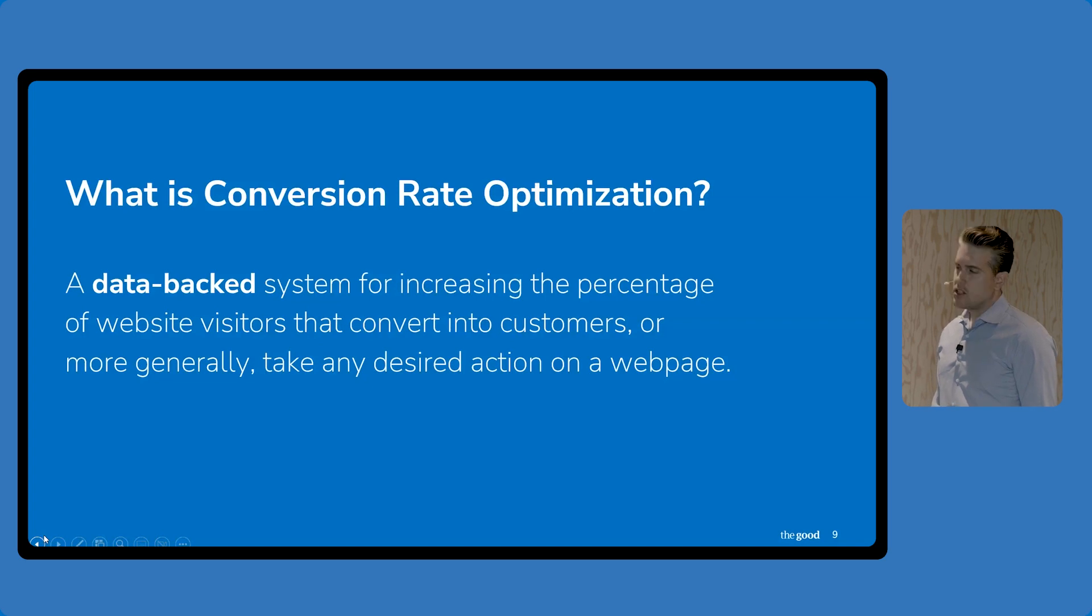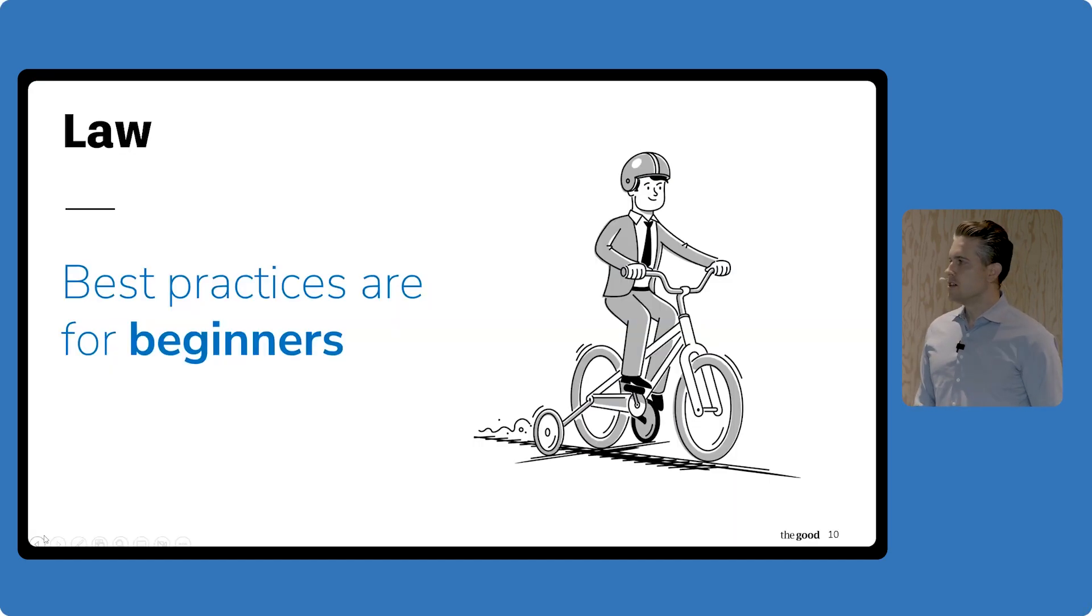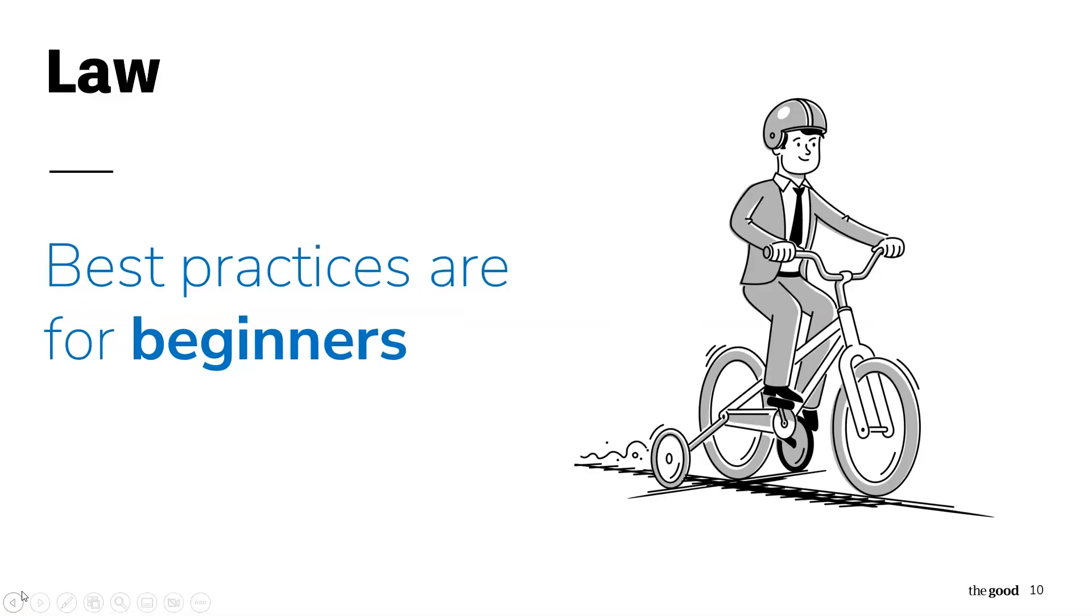The reality is that CRO isn't about trying random tactics. It's not about doing a checklist. It's about having the right data and making data-backed decisions. So that's why our first law today is that best practices are for beginners. I want to talk about what I mean about this. Best practices are kind of like training wheels. They can add a lot of value when you're first starting out, but if you keep the training wheels on too long, you never learn what works best for your specific site visitors.